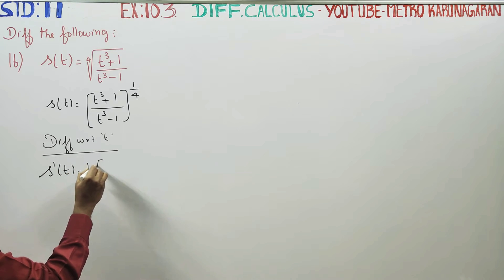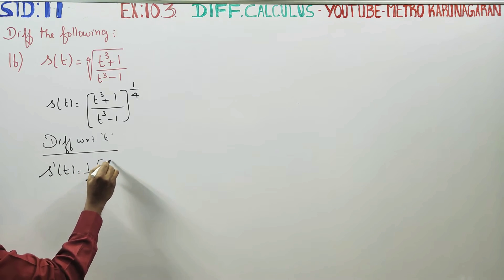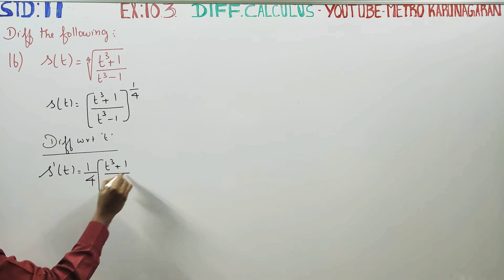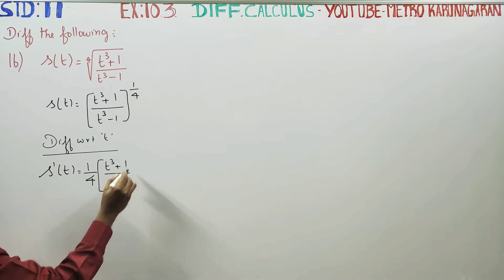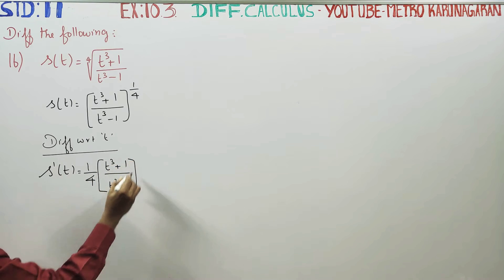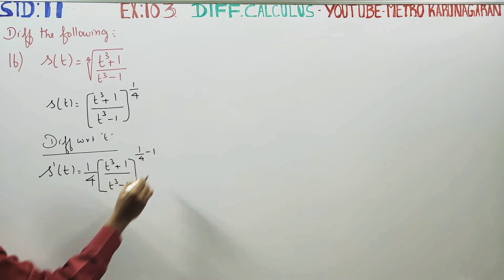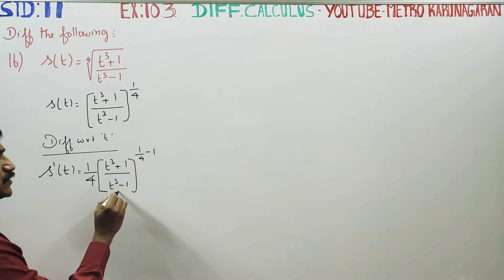Using the chain rule, the rule gives us 1 by 4 times (t cubed plus 1 divided by t cubed minus 1), all raised to the power 1 by 4 minus 1.